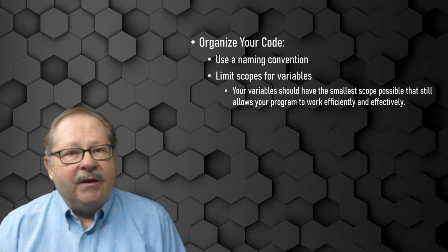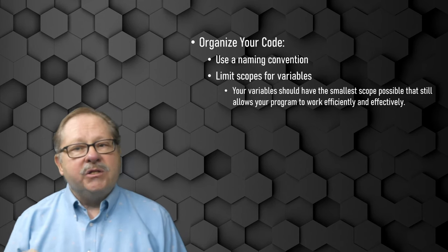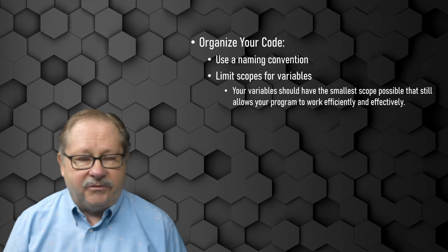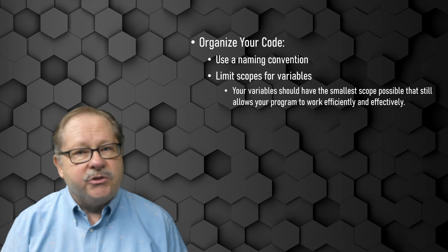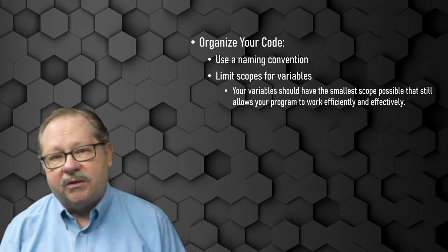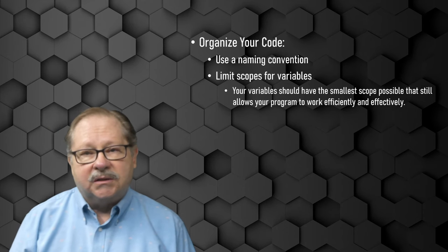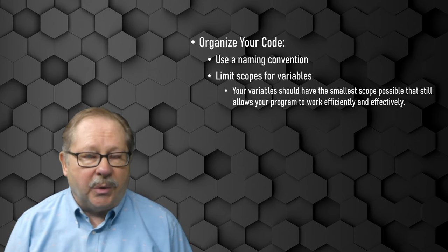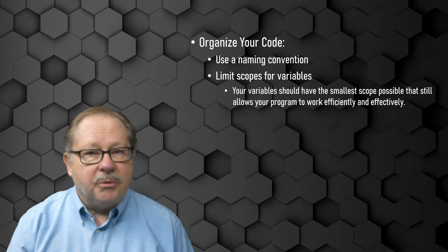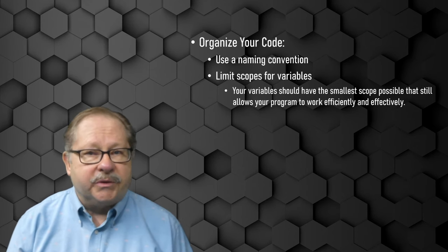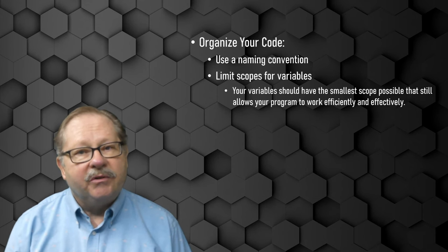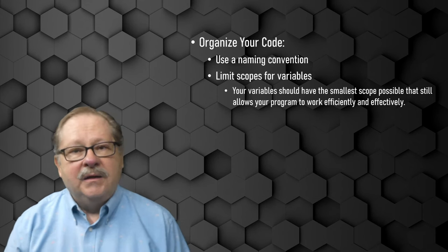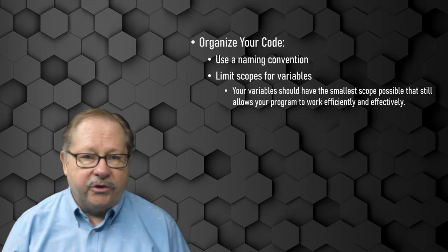Your variables should have the smallest scope possible that still allows your program to work efficiently and effectively. Create your variables at the procedure level by default, and only increase the scope when the logic of your code requires it. Keep your globally scoped variables in their own module. When the list of global variables begins to get too big, consider refactoring your code.